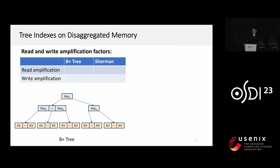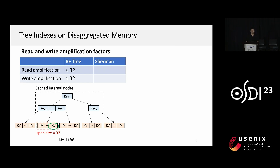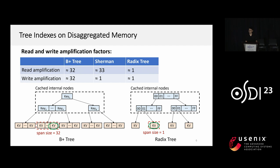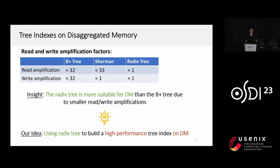We conducted a theoretical analysis on the read and write amplification factors of chain indexes on DM. When internal nodes are cached, the read and write amplification factor of the B+ tree is about 32, which is the span size of the leaf node assumed in our analysis. Sherman is the state-of-the-art B+ tree designed for DM; it avoids write amplification issues by using entry-level versions to protect each key-value item. However, it still suffers from large read amplification. As for the radix tree, since its leaf node contains only one single key-value item, it has the lowest known read and write amplification. So it is natural to use the radix tree to build a chain index on DM.